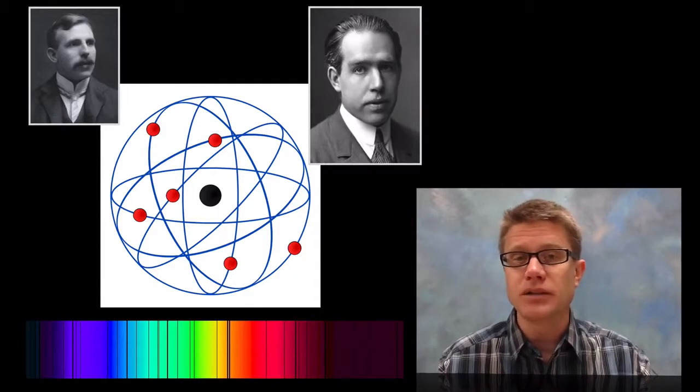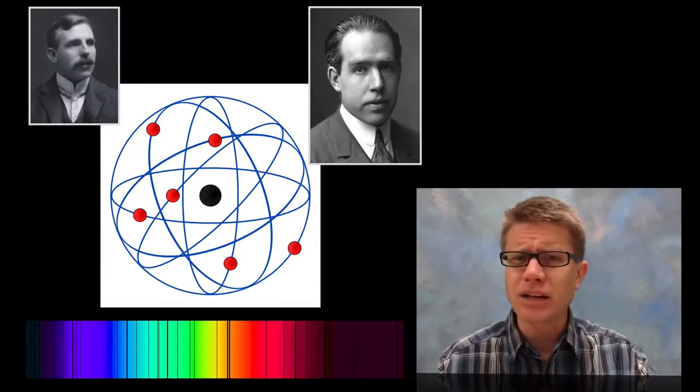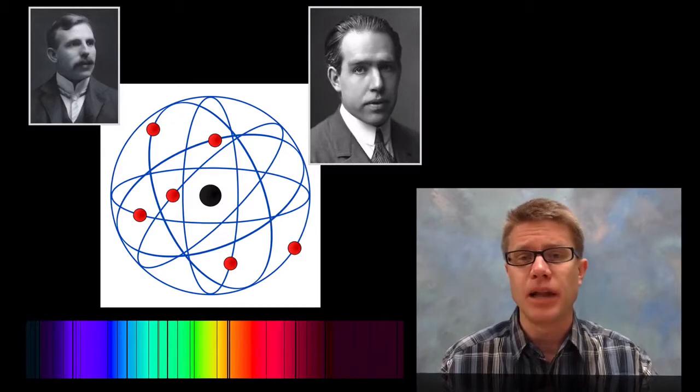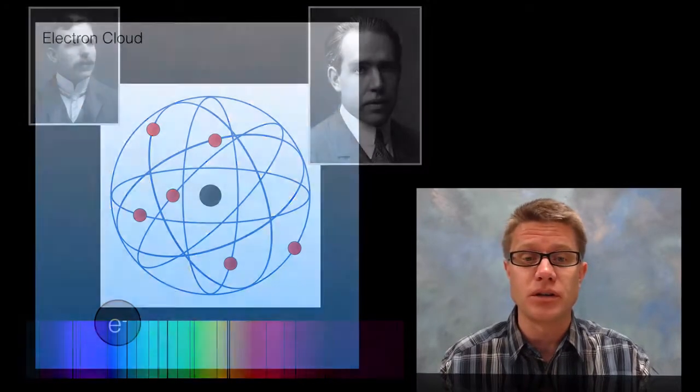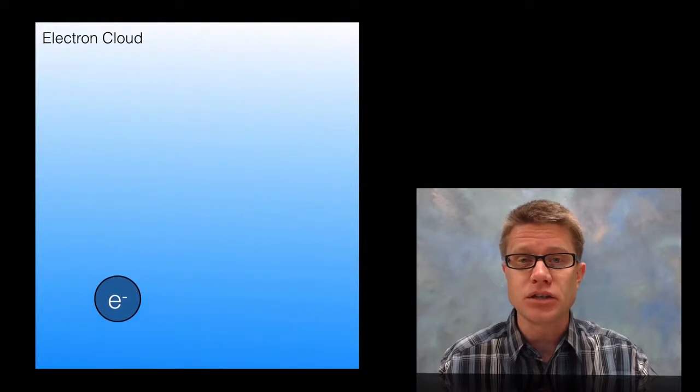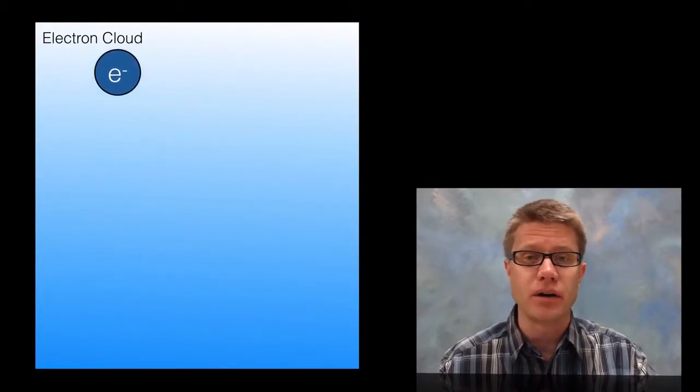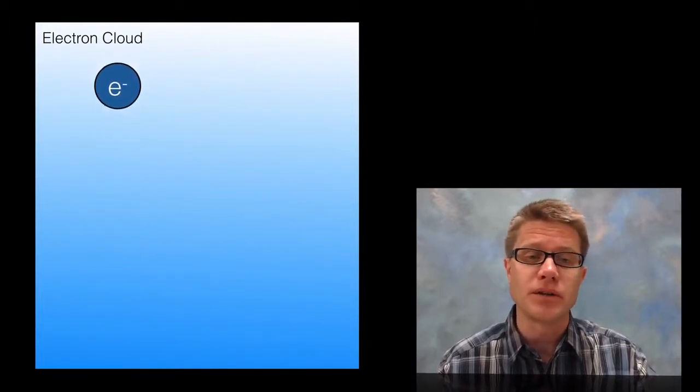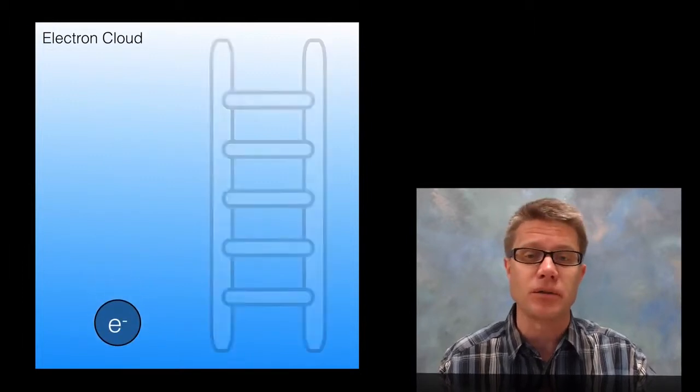But there were problems with this planetary model. Electrons weren't orbiting like planets. They were actually jumping between orbits according to Niels Bohr. And so they didn't just move back and forth on all these infinite number of orbits around the nucleus giving off a smooth amount of spectrum.